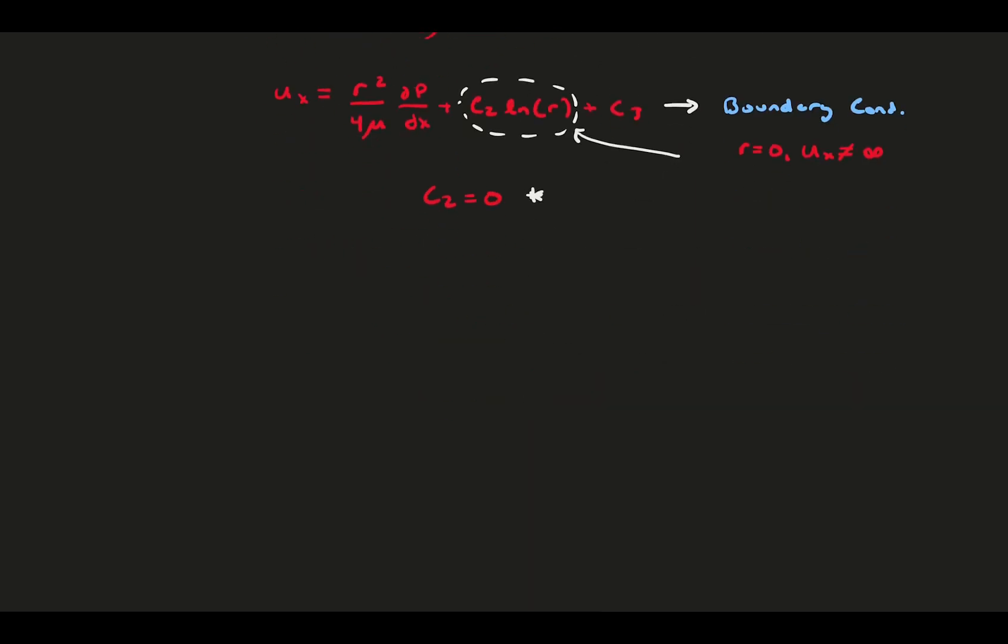Second, we apply the no-slip condition at the wall, which gives us our expression for c3, where little r equals big R. Plug these two constants back into the original expression for u_x and reorganize to get its final form.